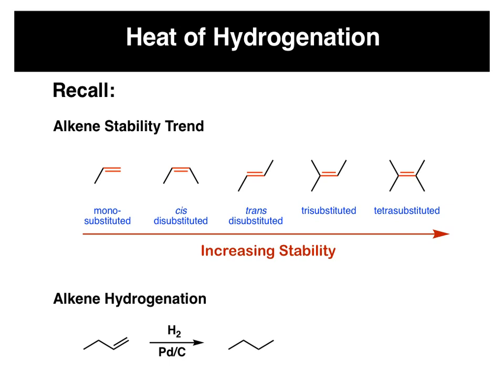The first is alkene stability, and we know that if you have an alkene, as you add non-hydrogen substituents to it, like carbons, you're going to increase the stability of the alkenes. So here's a mono-substituted, two substituents or di-substituted, be it cis or trans, tri-substituted, and tetra-substituted. So stability increases as you increase substitution.